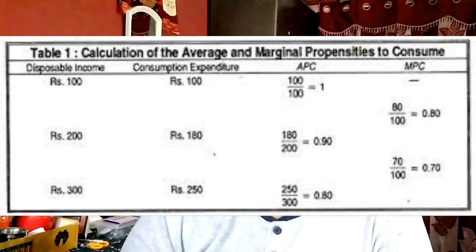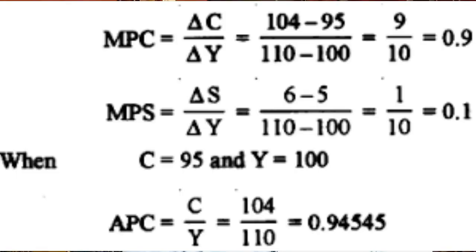The properties and characteristics of APC: since autonomous consumption is positive, APC is greater than zero. The ratio of APC falls with an increase in disposable income, because with rising income the proportion of consumption expenditure decreases, forming a smaller part of income.